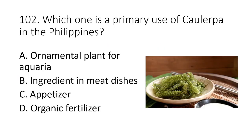Question 102. Which one is a primary use of Caulerpa in the Philippines? A. Ornamental plant for aquaria B. Ingredient in meat dishes C. Appetizer D. Organic fertilizer. The answer is C. Appetizer.